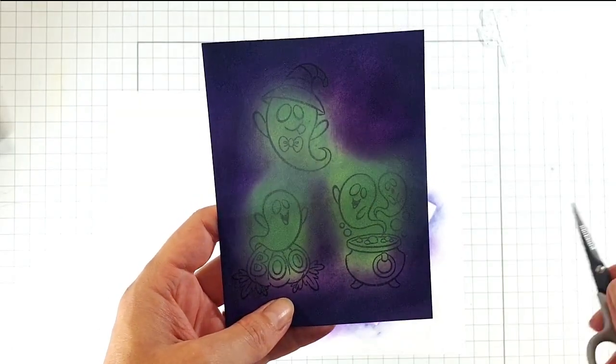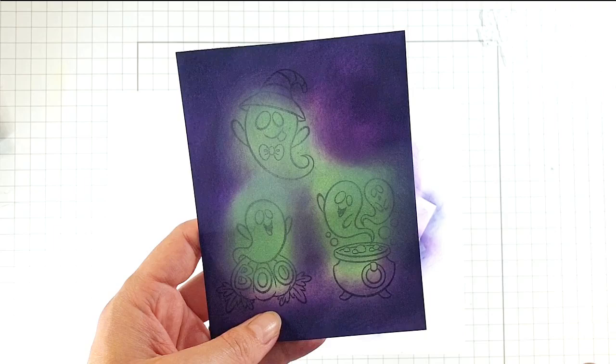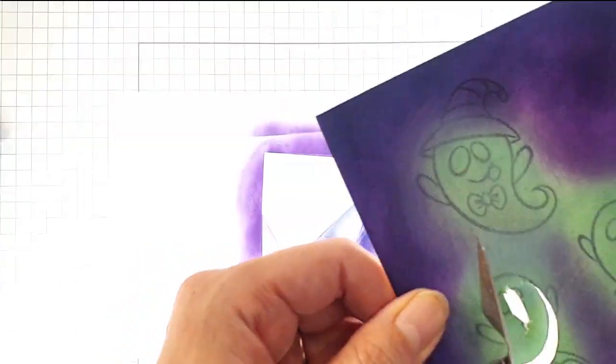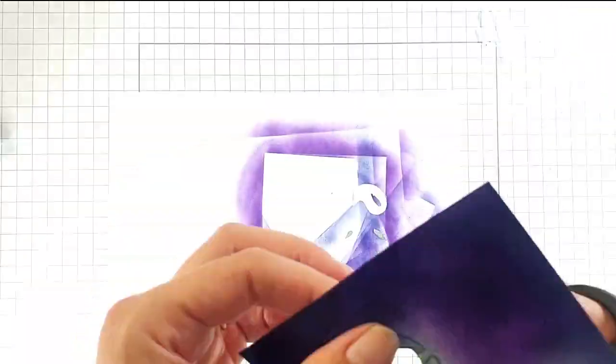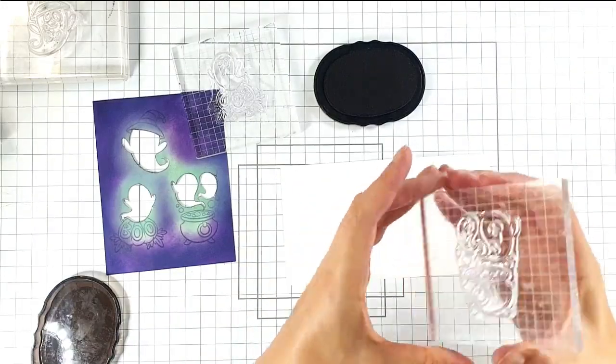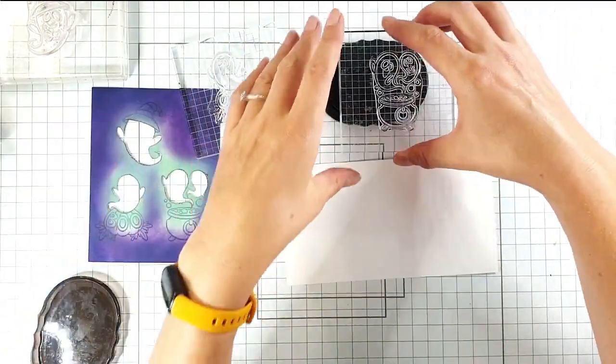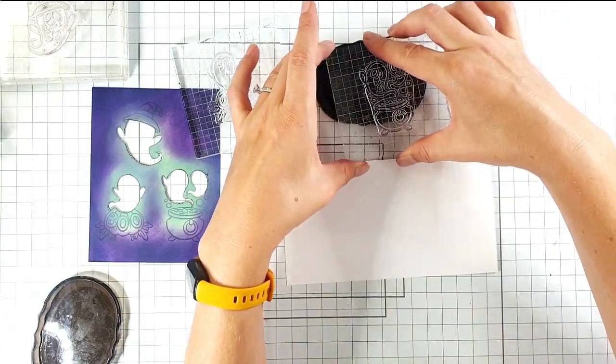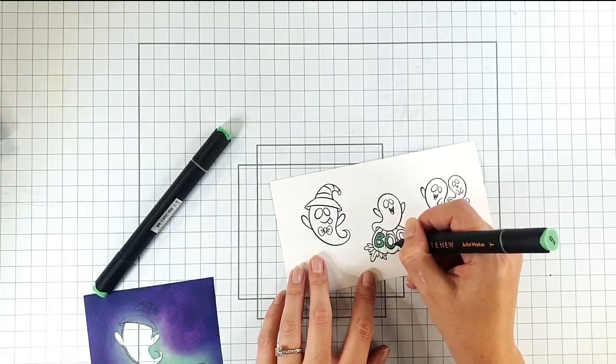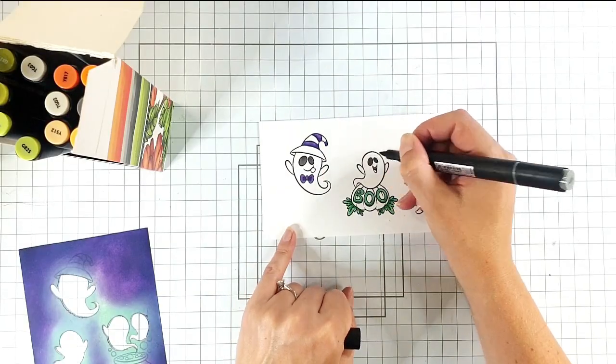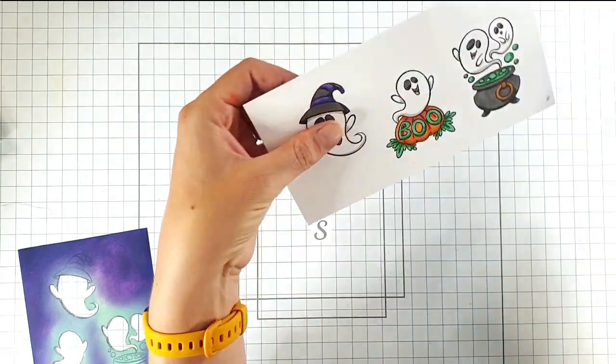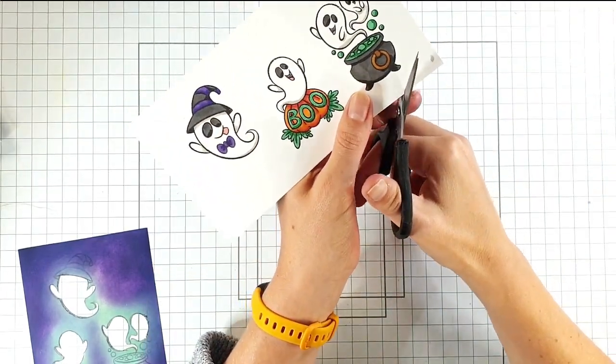So then I want my lights to shine through the ghosts, so I'm going to cut the ghosts out of this. So then I'm going to stamp and color another set of images that eventually will stick over these ones. So I'm going to cut those out and I'm going to leave a little border around the outside.